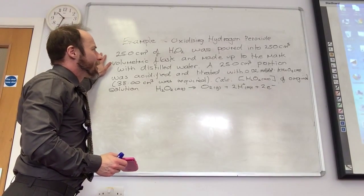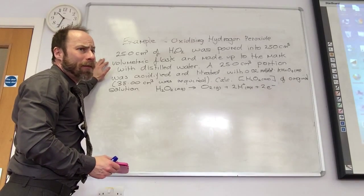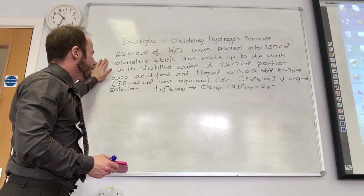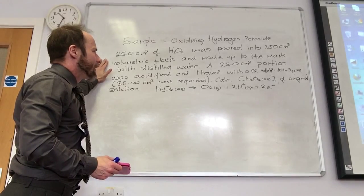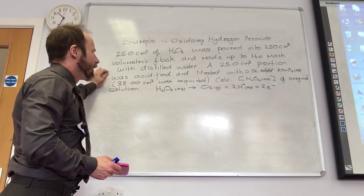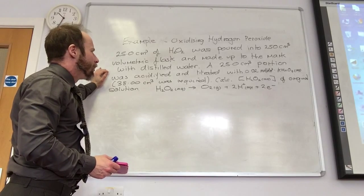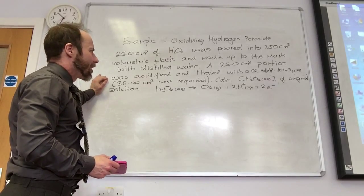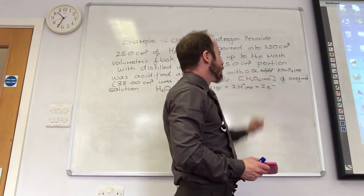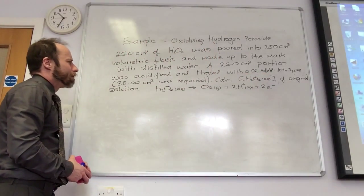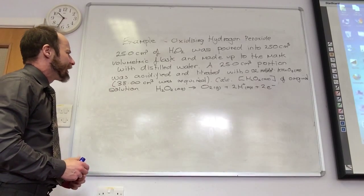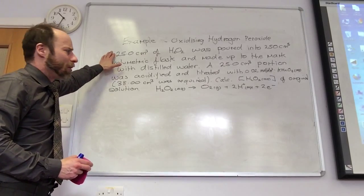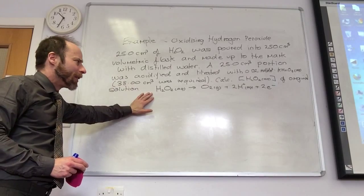You don't know anything about oxidizing hydrogen peroxide. However, they've given you enough information to be able to work it out. So they've told me I took 25 centimeters cubed of hydrogen peroxide and I popped it into a 250 centimeters cubed volumetric flask and made it up with distilled water. I then took 25 centimeters cubed of that, acidified it and titrated it with 0.02 moles per decimeter cubed potassium permanganate solution. And I used 38 centimeters cubed. It wants me to calculate the concentration of the original solution. And they've given me this half equation here.